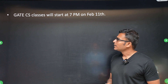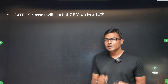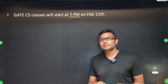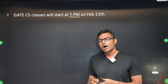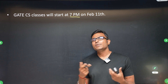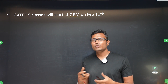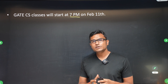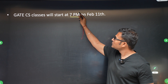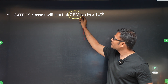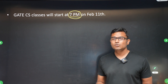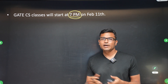Please note carefully: every day at 7 PM there will be a class for GATE CS. We will be doing it on even Saturdays and Sundays — maybe once in a while we may not do a class on Sunday, but mostly it will be every day. Classes will start from 7 PM every day for GATE CS, so that people who are working and have offices till 6 PM can also attend.